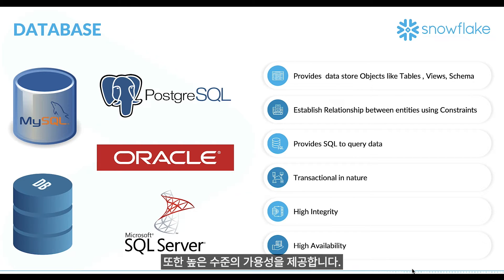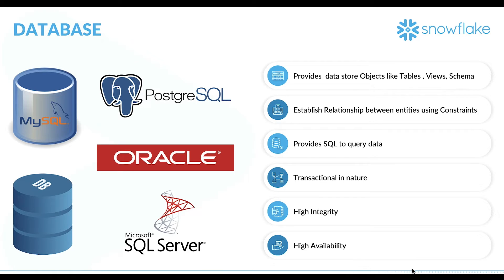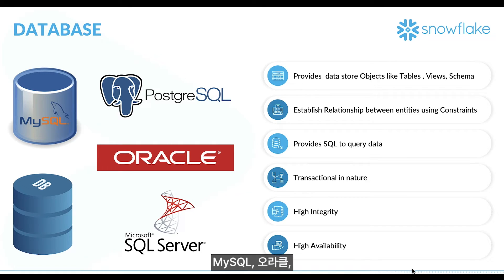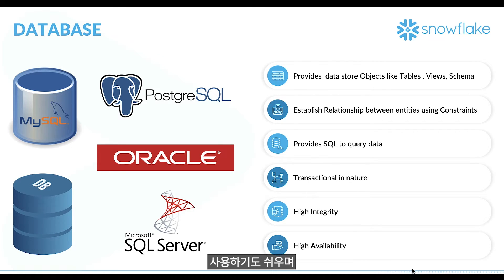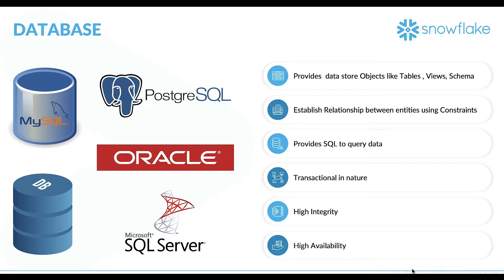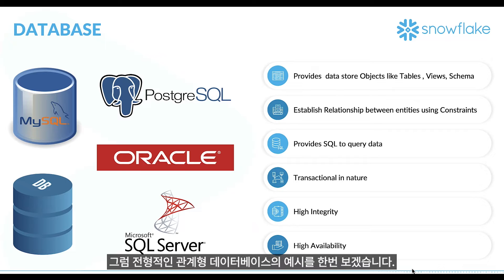It is fast and has a very high level of integrity because it enforces integrity constraints. It also provides high availability capabilities. Companies usually store data related to all aspects of their business functions in relational databases — for example, e-commerce data. Examples of database technologies are SQL Server, MySQL, Oracle, and PostgreSQL. They are easy to manage, well-established, and proven, but they become expensive when data grows large and do not scale well for large data sets or big data.